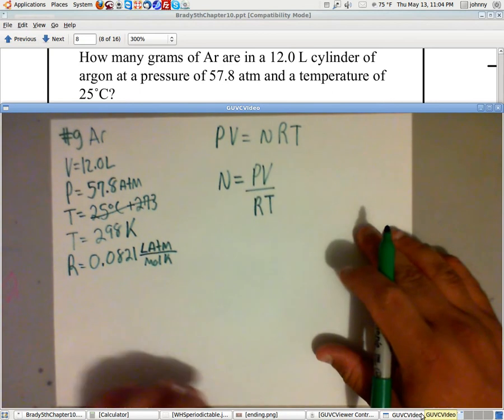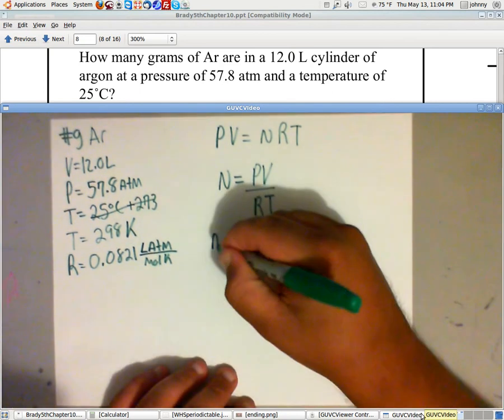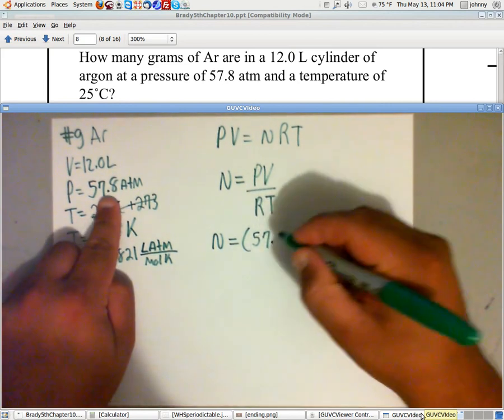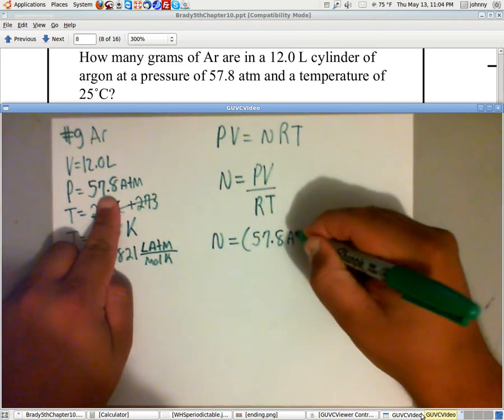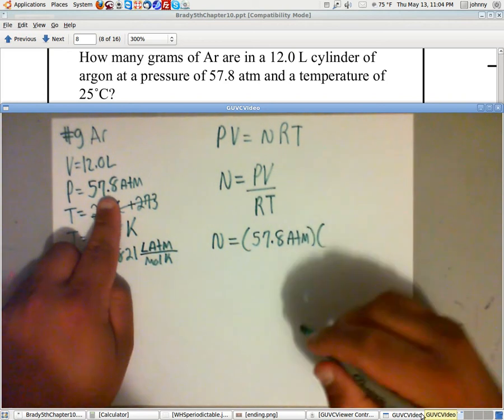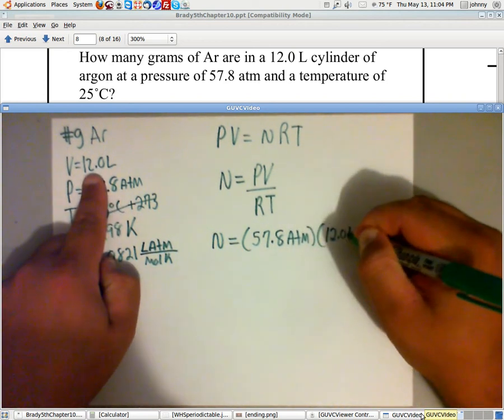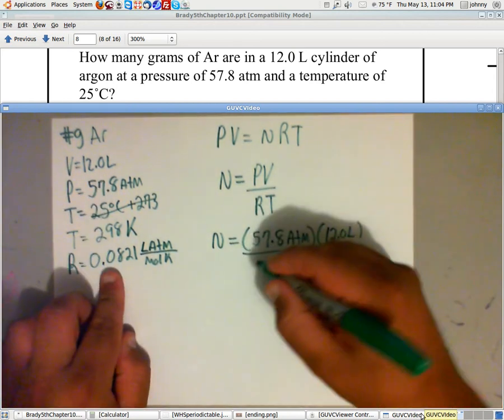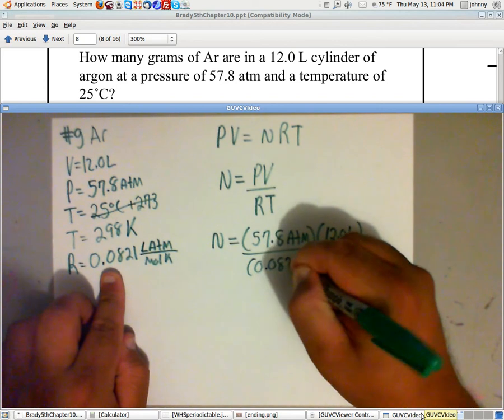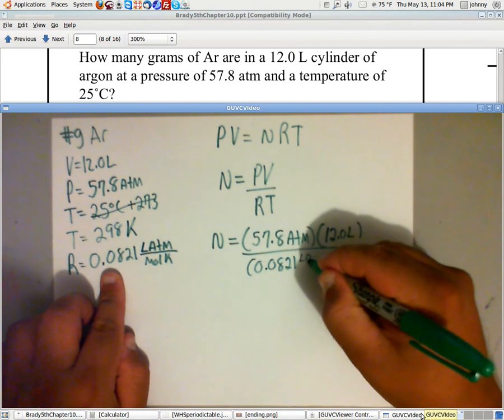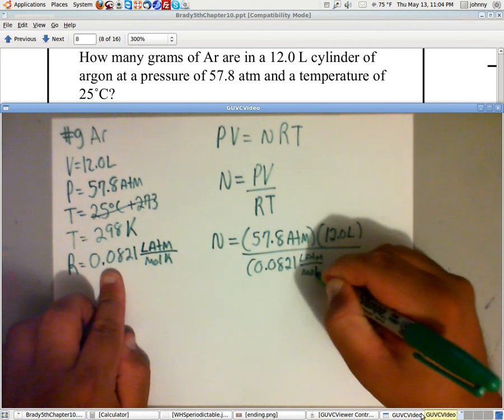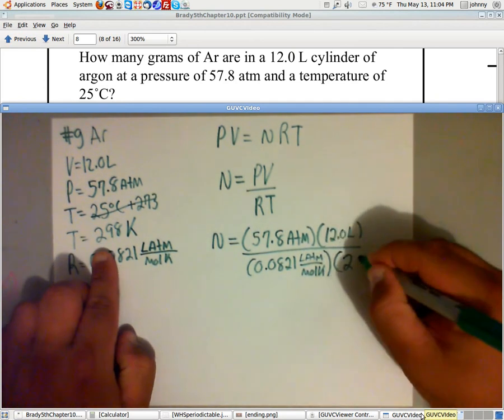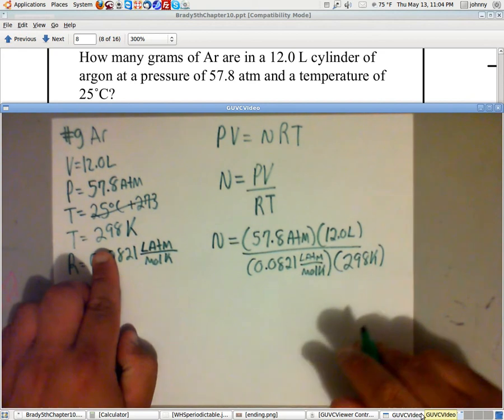So let's go ahead and fill this out. Remember, N is the number of moles. Pressure, what's what? 57.8 ATM. And what's my volume? 12 liters. Divided by, what's the gas constant? 0.0821 LATM over MOLK. And what's the temperature? 298 Kelvin.